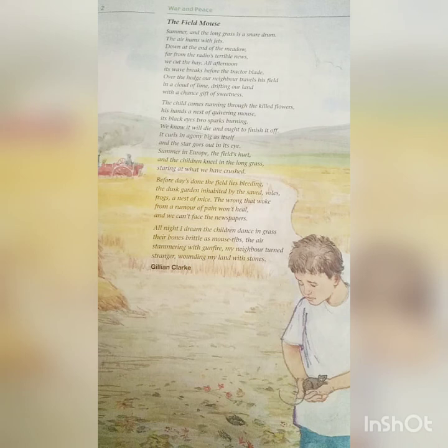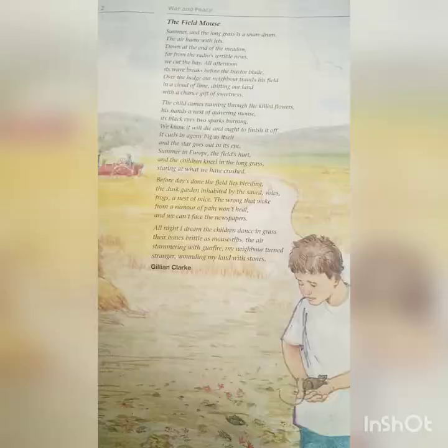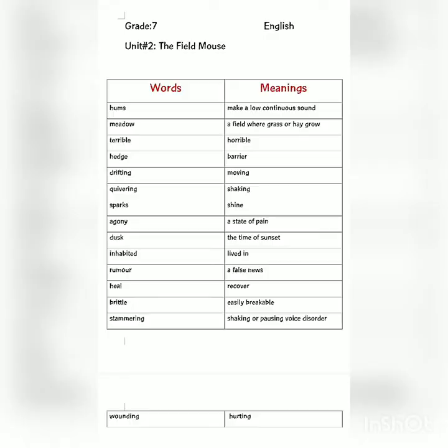So this is the poem: literally it shows the time of a field and the killing of a mouse, but if we look at the other side, it shows the wartime of the Bosnian people and the European people attacking each other. Then there come the difficult words and their meanings that we have done in this unit, and you have already made the sentences of these words.